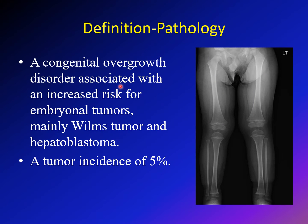Hemihypertrophy is associated with an increased risk of embryonal tumors, mainly Wilms' tumor and hepatoblastoma. This is very important in management because we need to discuss how we can do the surveillance for these tumors. The tumor incidence is about 5%.